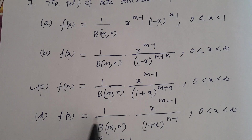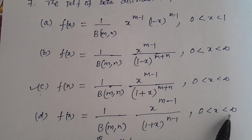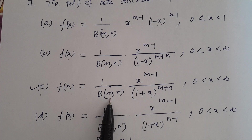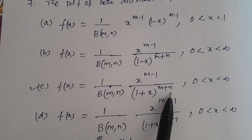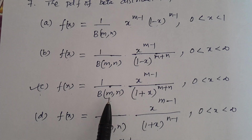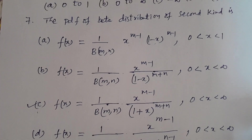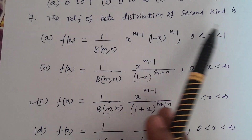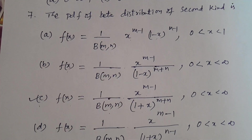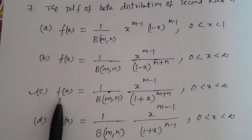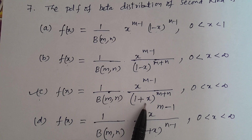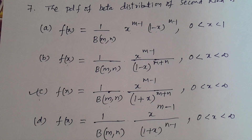Option D — f(x) = 1/β(m,n) · x^(m-1) · (1+x)^(n-1), 0 < x < ∞. The correct answer is Option C: f(x) = 1/β(m,n) · x^(m-1) · (1+x)^(m+n), 0 < x < ∞. In Telugu — the PDF of beta distribution of second kind: correct answer is Option C, f(x) = 1/β(m,n) · x^(m-1) · (1+x)^(m+n), 0 < x < ∞.